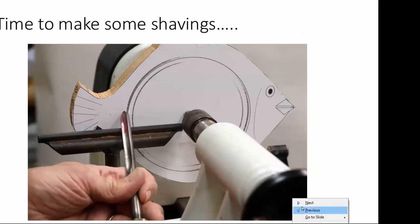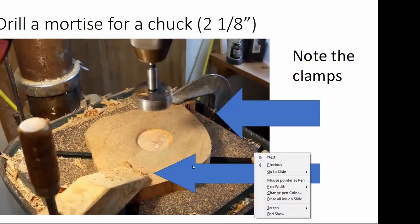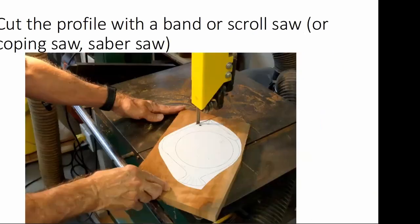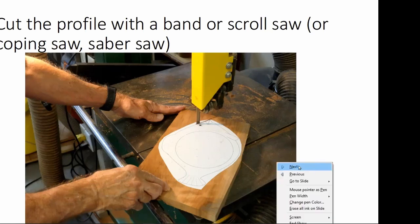We're at the bandsaw right now. The only thing I would say about bandsaw is that if you have a 3/8-inch blade, like a woodcutter blade like I have, it's hard to get around corners. So you have to make a number of cuts straight in to the corners where the smooth curves meet before you try to cut the piece out.